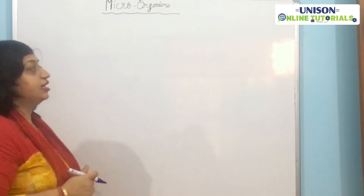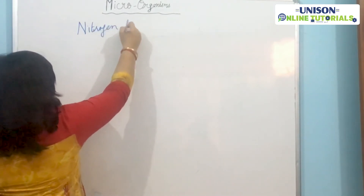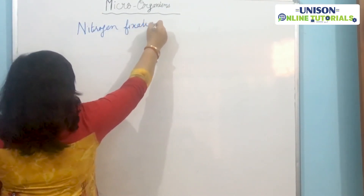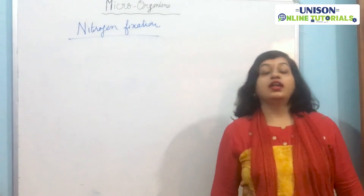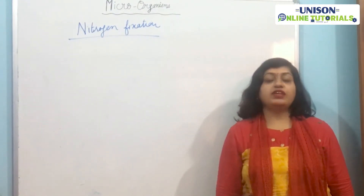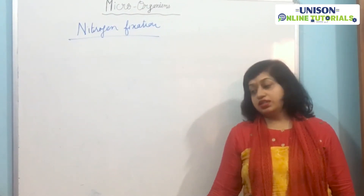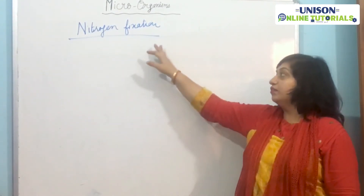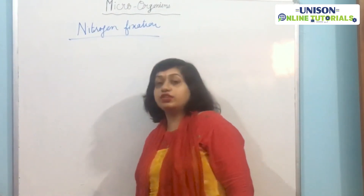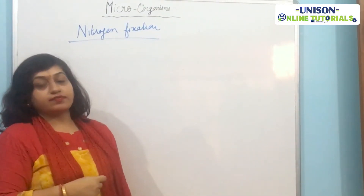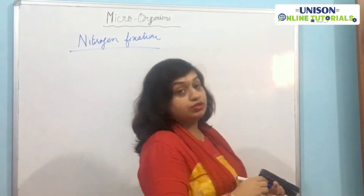Our next and last topic is the nitrogen cycle. Before nitrogen cycle, we need to understand nitrogen fixation. In our atmosphere, nitrogen is present in the form of gas at about 78%. But plants and animals cannot use this atmospheric nitrogen directly for their metabolic activity. Nitrogen fixation is the process in which atmospheric nitrogen is converted into useful compounds.